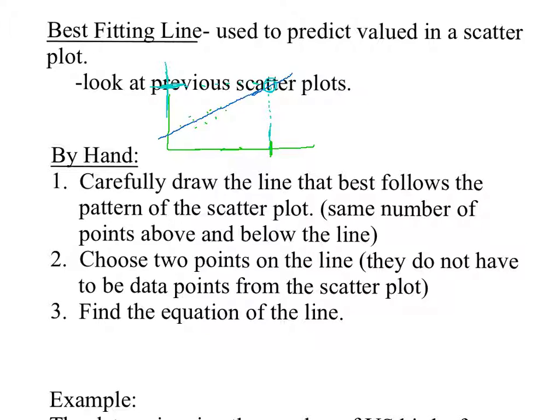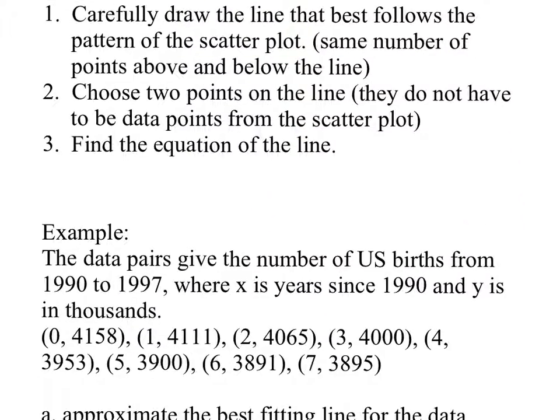So today, your job is to make best fitting lines by hand. Tomorrow, we're going to work on calculator. So by hand, number one, you carefully draw the line that best follows the pattern of the scatter plot. You want the same number of points above and below the line, but you also want the line to go on the same slope as the points. Number two, choose two points on the line. They do not have to be the data points from the scatter plot. So as soon as I have that line, I don't care about the points. I just care about the line itself. And where does it cross the grid so I can get two points? Because once I have those two points, I can find the equation of the line, and then we can use that equation to make some predictions.